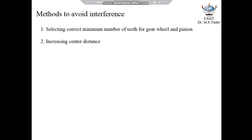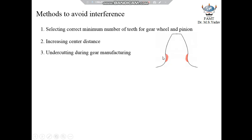The third method is undercutting of gears during manufacturing. During undercutting, material from the root of a gear tooth is removed by the machine gear tooth during manufacturing. Enough care will be taken while designing the gear tooth so that the tooth will not fail with the available tooth thickness at the root while transmitting power.